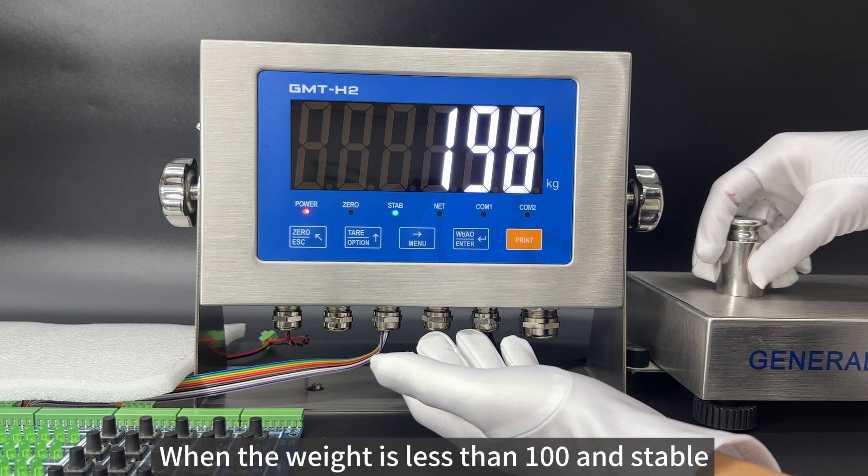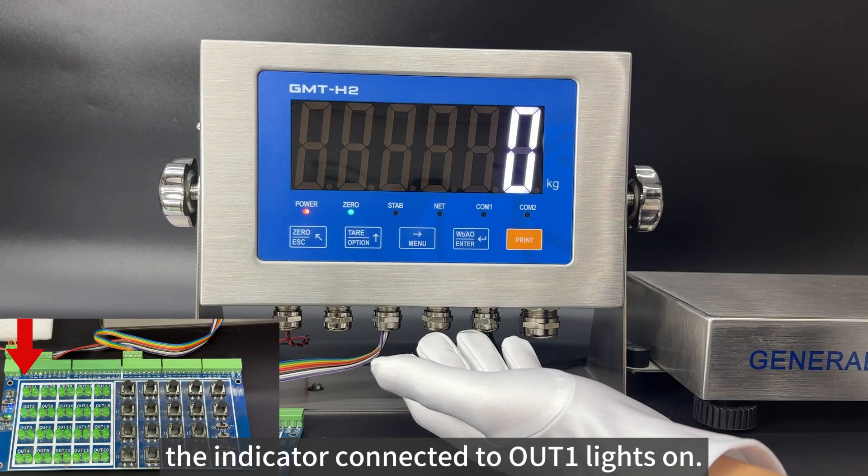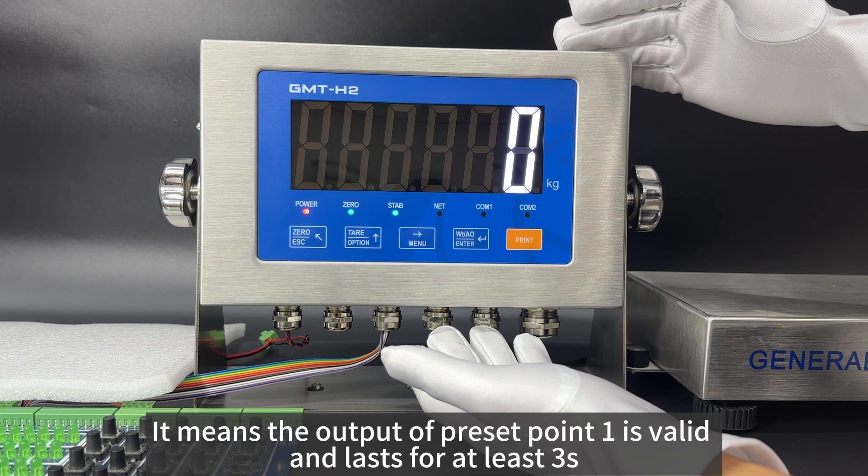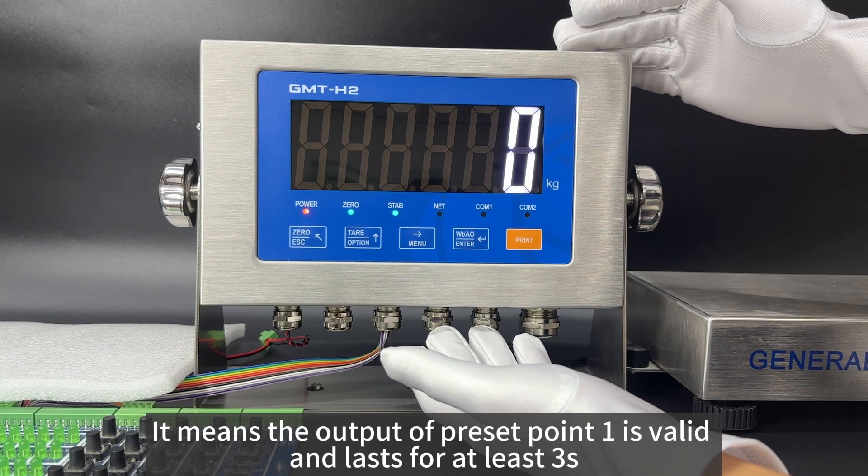When the weight is less than 100 and stable, the indicator connected to OUT1 lights on. It means the output of preset point 1 is valid and lasts for at least 3 seconds.